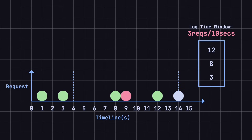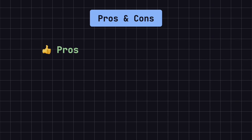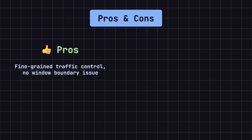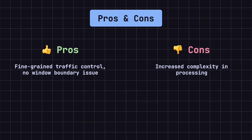At the fourteenth second, another request arrives. The system removes the expired timestamp 3, leaving 8 and 12. With space available, the system accepts this request and updates the log to 8, 12, and 14. At the fifteenth second, a new request arrives. The system checks for expired entries but finds none that are over 10 seconds old, so no entries are removed. Since the log is full, this request is rejected. The advantage of the sliding window log algorithm is that it provides fine-grained traffic control, accurately counting the number of requests within the sliding window by using timestamps, avoiding the boundary issue seen in the fixed window algorithm. However, this precision comes at the cost of increased complexity — the system must maintain a log and check or update it with each request, which consumes more computational resources, especially when dealing with a high volume of requests.